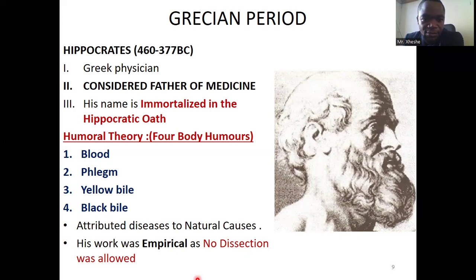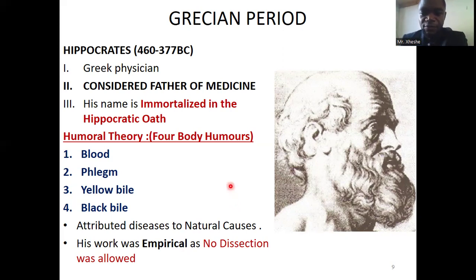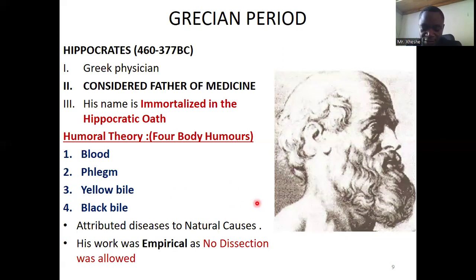Hippocrates is also immortalized for coming up with four humors — a humoral theory based on various body secretions that can be seen. The four humors were blood, phlegm or mucus, and yellow and black bile. According to Hippocrates, seeing black bile means a person is diseased — which is essentially blood that has clotted and turned black. Most of these theories were based on observation, so they were not fully accurate. No dissections were done; all studies were based on observation.